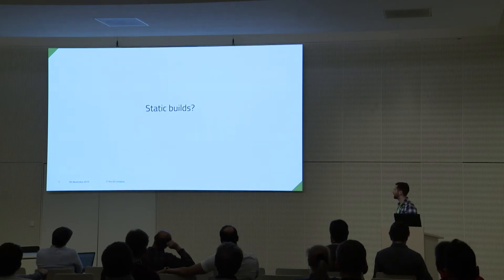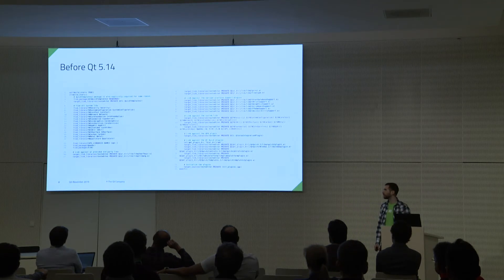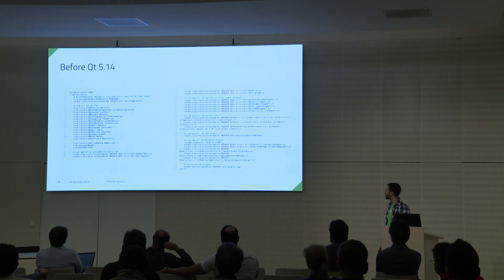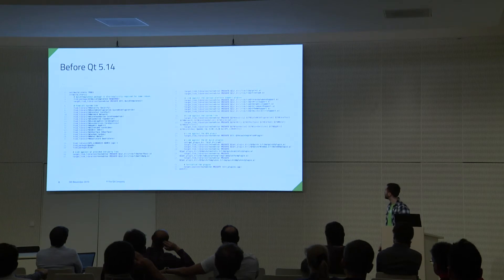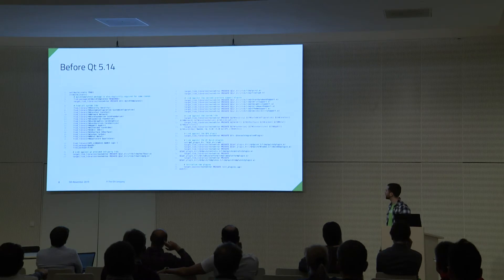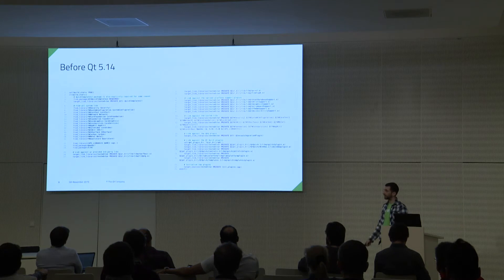First goal: static builds. How do we achieve that? This is how you used to achieve it before Qt 5.14. You have to manually specify all these other libraries that you need to link against. In this specific case, I was on Mac, so you need to link all the frameworks, all the static libraries that are built like the third-party ones, all the helper libraries. It's manually the QPA plugin, manually the Qt Quick plugin, and then you need this init_plugin CPP file which basically has all these macros to initialize each plugin. It's a mess. Multiply this by the number of platforms that you want to support — not nice.